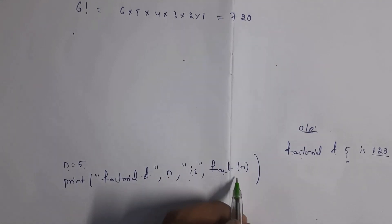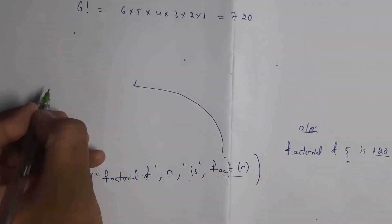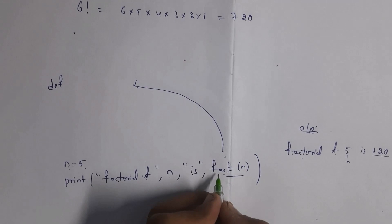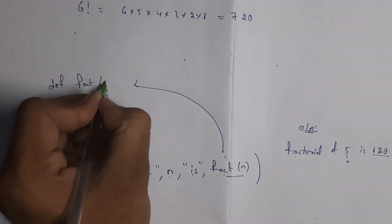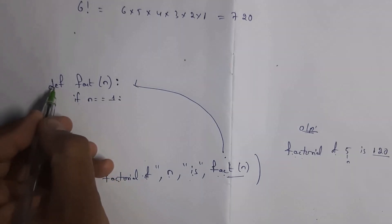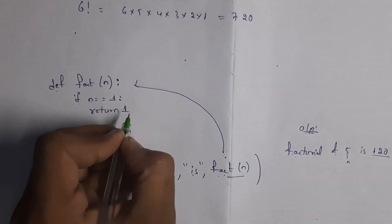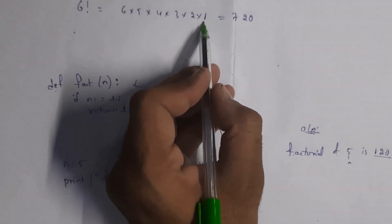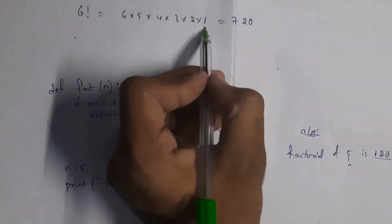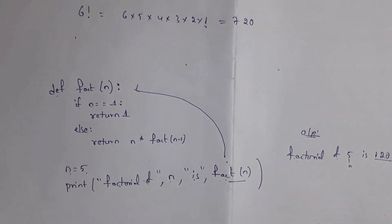I am writing separate code for this function. We create the function using 'def', so write 'def fact(n)'. Now I need to write code inside this function to get the result 120. I am writing an if condition inside this function: if n == 1, return 1. This is the break condition — whenever we reach one, we stop. Else, return n * fact(n - 1). This is the program to get the factorial.